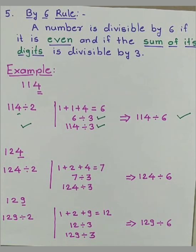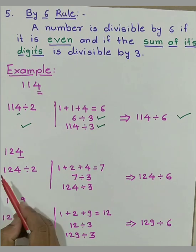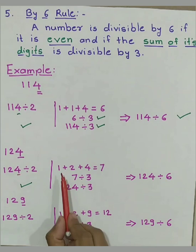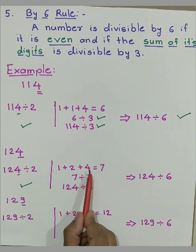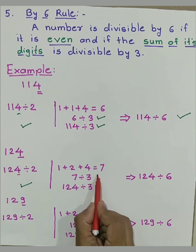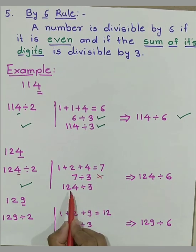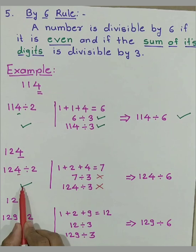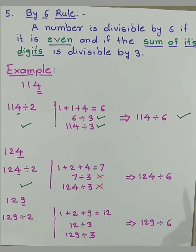So next example is 124. As it is an even number, it can be divided by 2. And the sum of digits is 1 plus 2 plus 4 is equal to 7. 7 can't be divided by 3. So we can't divide 124 by 3. Out of 2, 1 test fails. Hence, 124 can't be divided by 6.